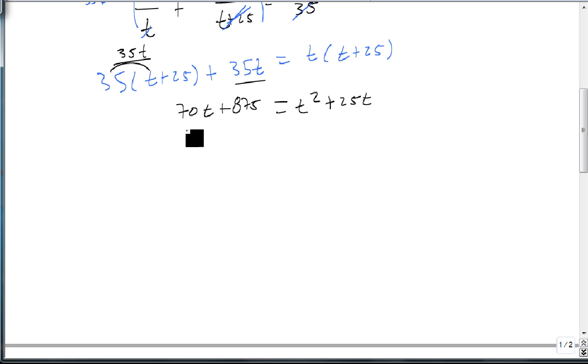Since it's a quadratic equation, we can move everything over. So let's subtract 70t and 875 and get 0 equals t squared minus 50t minus 875.